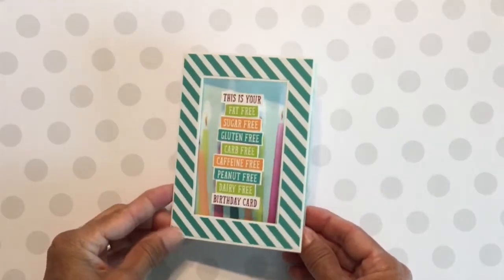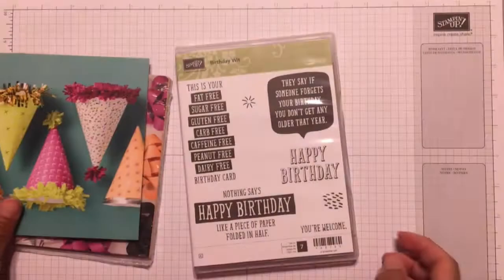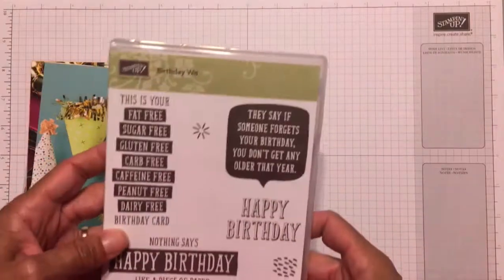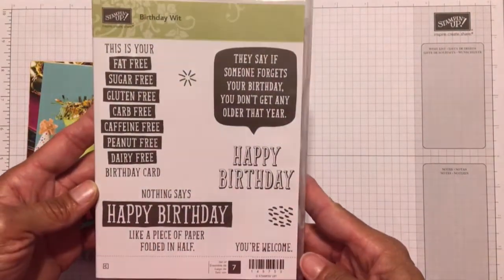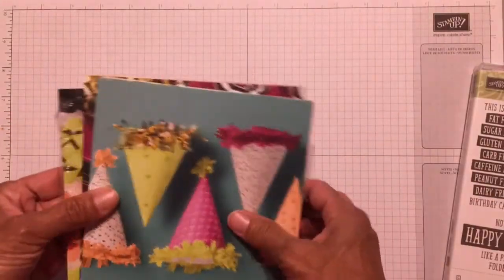The one on the left is the first one I made. I've already sent it to my brother-in-law. He actually got it on time this year. The stamp set I use for these cards is the Birthday Wit stamp set, which is kind of fun for all kinds of birthday cards.